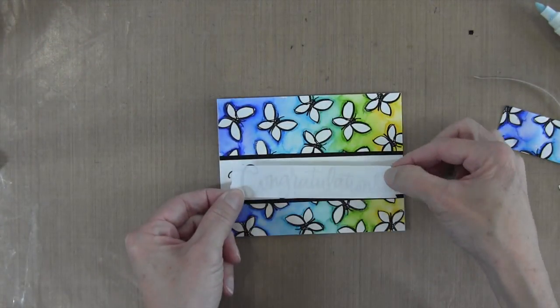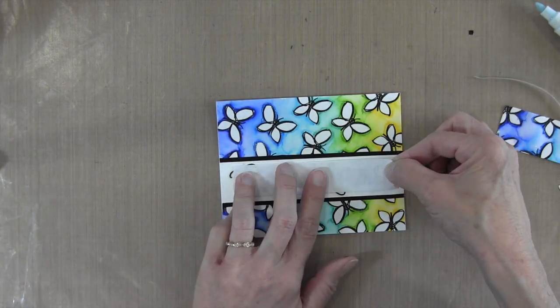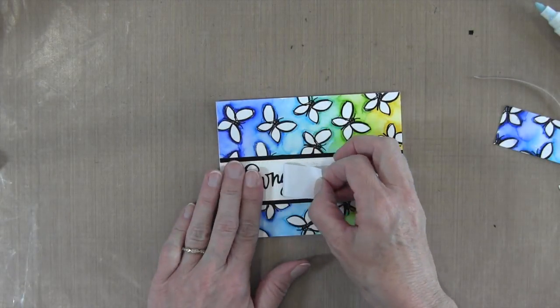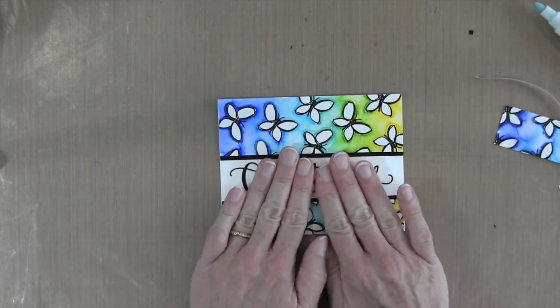You can see through it because it's a black sentiment, so it's really easy to place to make sure it's right in the middle. Then rub it down, and then the masking tape will come right off. So here's my sentiment. I love this font, it's so curly and pretty, it's just really elegant.